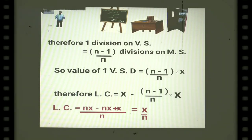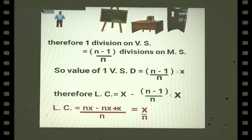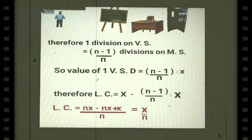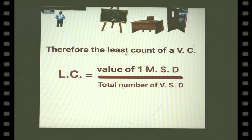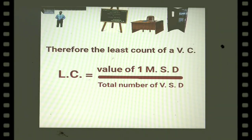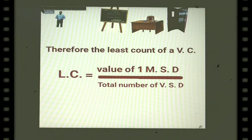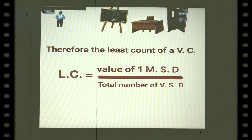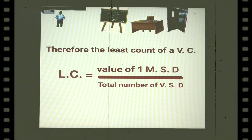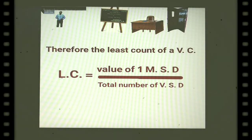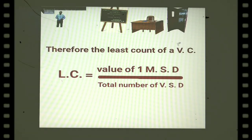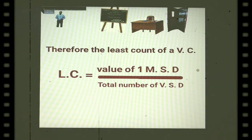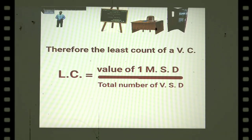On solving, the least count simplifies to x divided by N. Therefore, the least count of a vernier calipers equals the value of one main scale division divided by the total number of divisions on the vernier scale. This is the formula we will use while solving numerical problems.